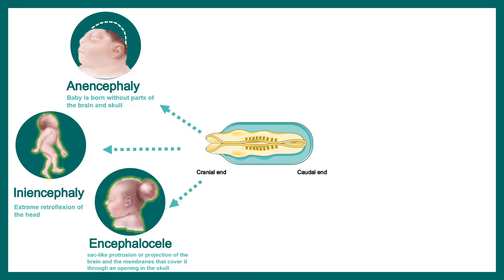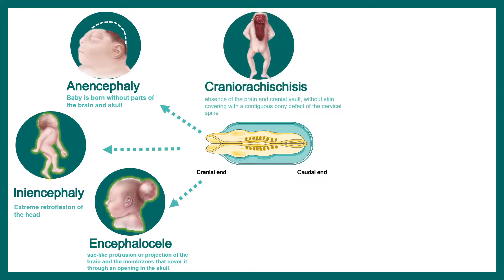There is also another defect known as craniorachischisis. In this case, the entire brain, cranial vault, and spinal cord are all absent. This is very severe — the babies do not survive. The less severe forms happen when there is a defect in the caudal end closing.